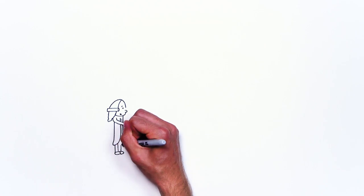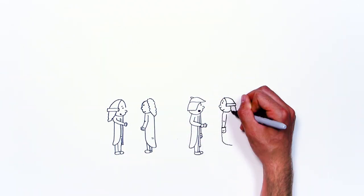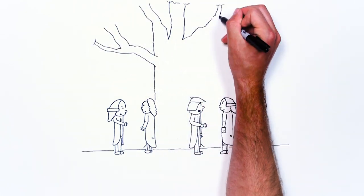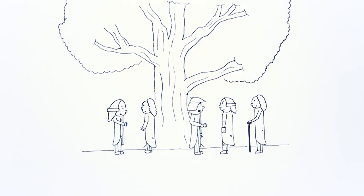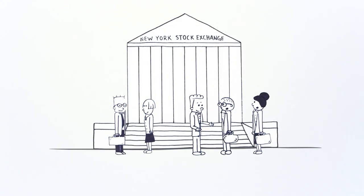That need for an orderly way to trade stocks was apparent even in America's earliest days. In 1792, a group of 24 stockbrokers gathered underneath a buttonwood tree on Wall Street in New York City. They signed the Buttonwood Agreement, creating what would become the nation's first stock market, the New York Stock Exchange.